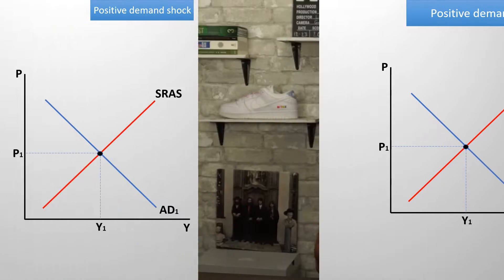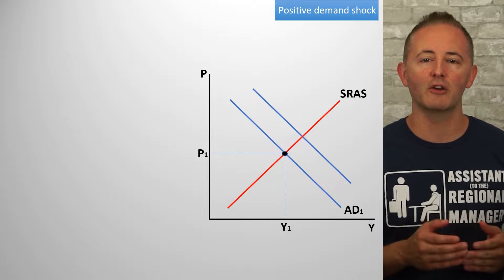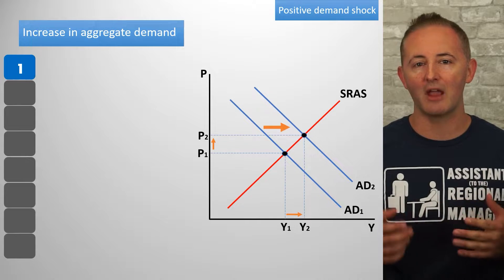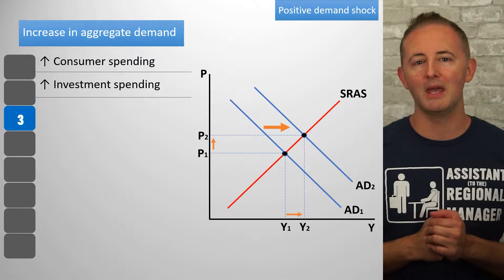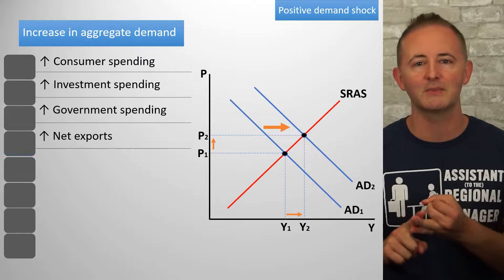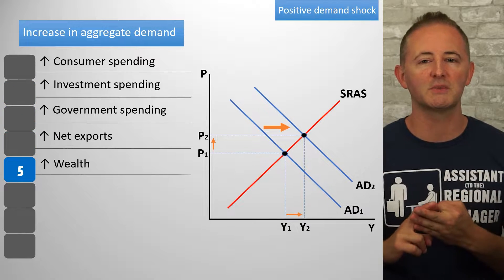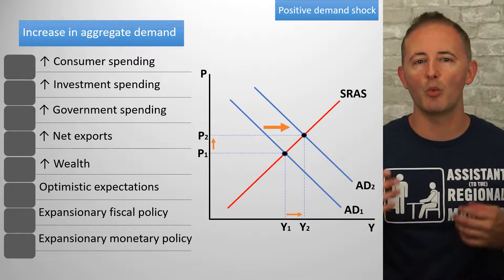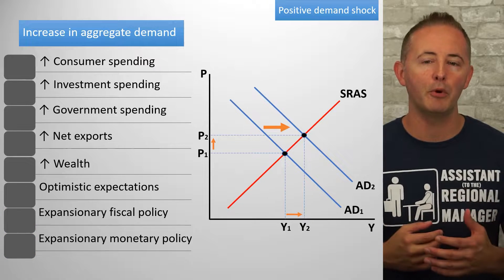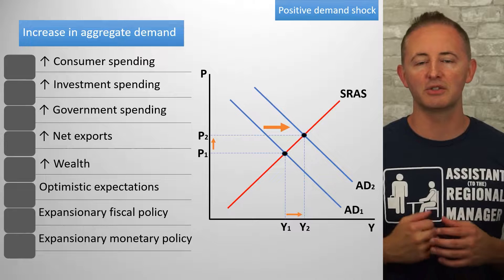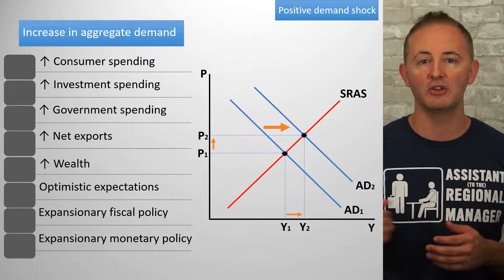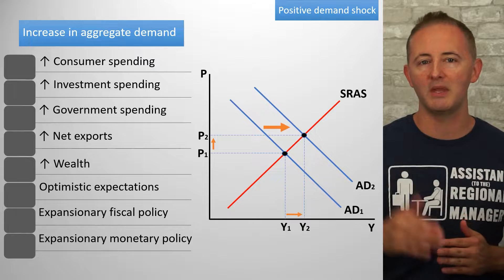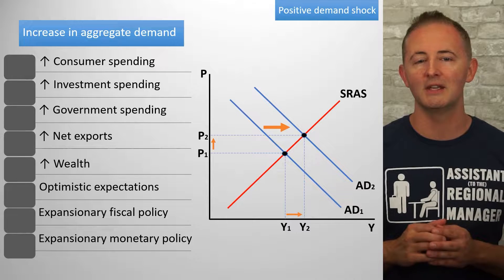Let's start with a positive demand shock, which is the AD curve shifting to the right. This is caused by an increase in aggregate spending in the economy, be it an increase in consumption, investment, government spending, or net exports. The important thing to notice is what happens to the price level and output as a result of the AD curve shifting to the right. In this case, the positive demand shock causes both P and Y to increase.